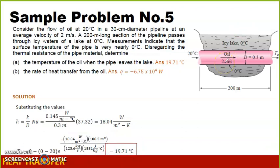The exit temperature is actually 19.71 degrees Celsius. Somehow the pipe is really insulated properly, because the temperature slightly changed from 20 degrees Celsius to 19.71 degrees Celsius. So we already have temperature of the oil when the pipe leaves the lake.